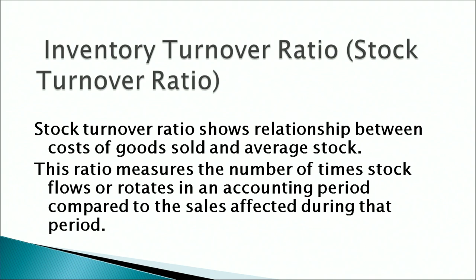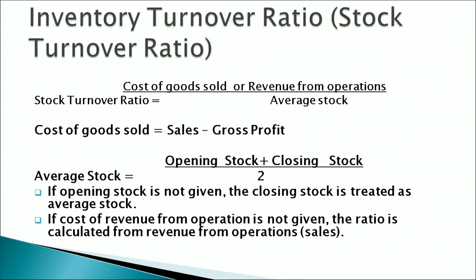Let us take up the first activity ratio: inventory turnover ratio, most popularly called stock turnover ratio. It shows the relationship between the cost of goods sold and average stock. Average stock means closing and opening stock divided by 2. This ratio tells us the number of times stock flows or rotates in an accounting period to generate sales. The faster the stock gets converted into sales, the higher the ratio — it is also expressed as a rate. The formula uses cost of goods sold or revenue from operations as the numerator.